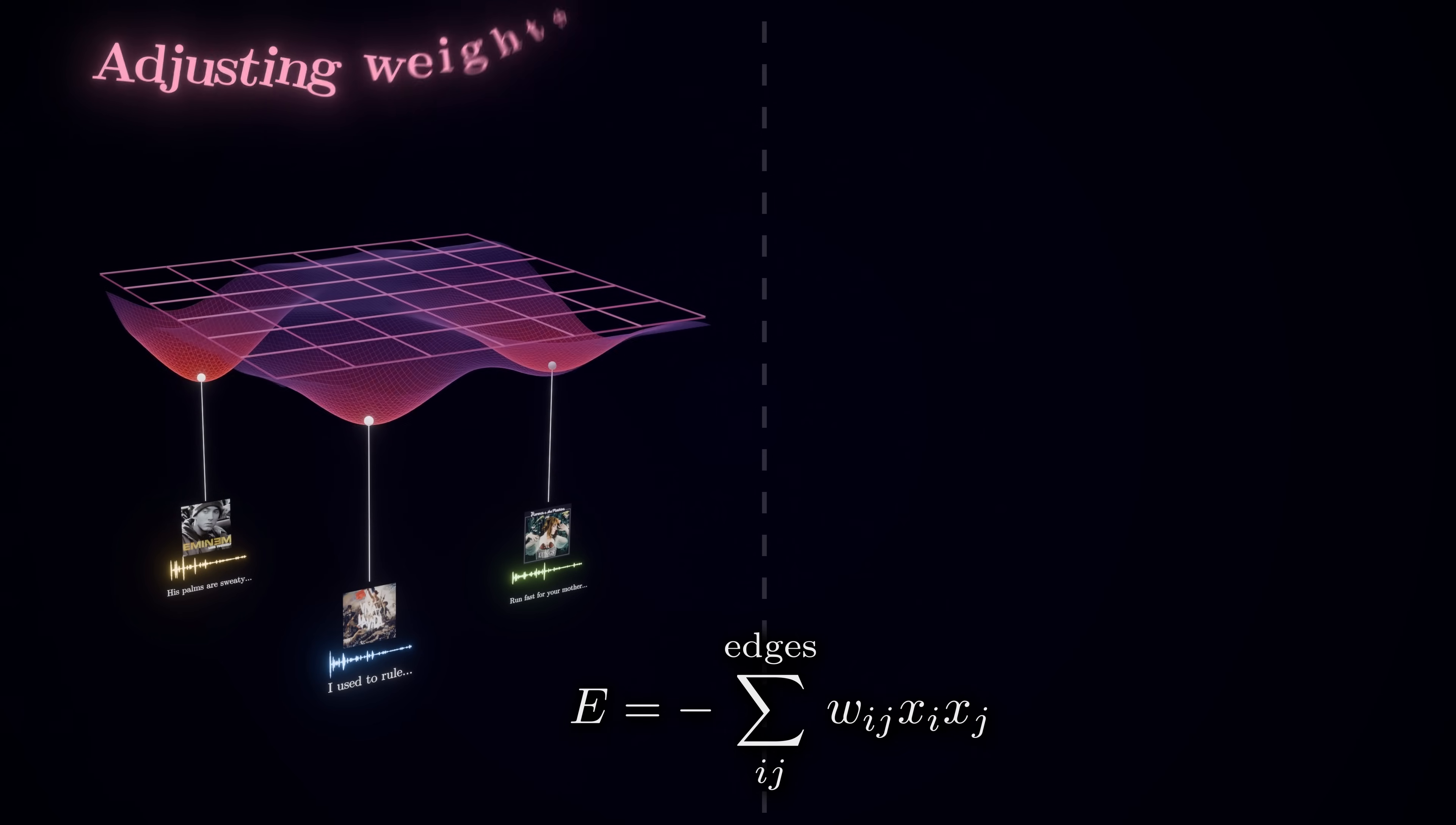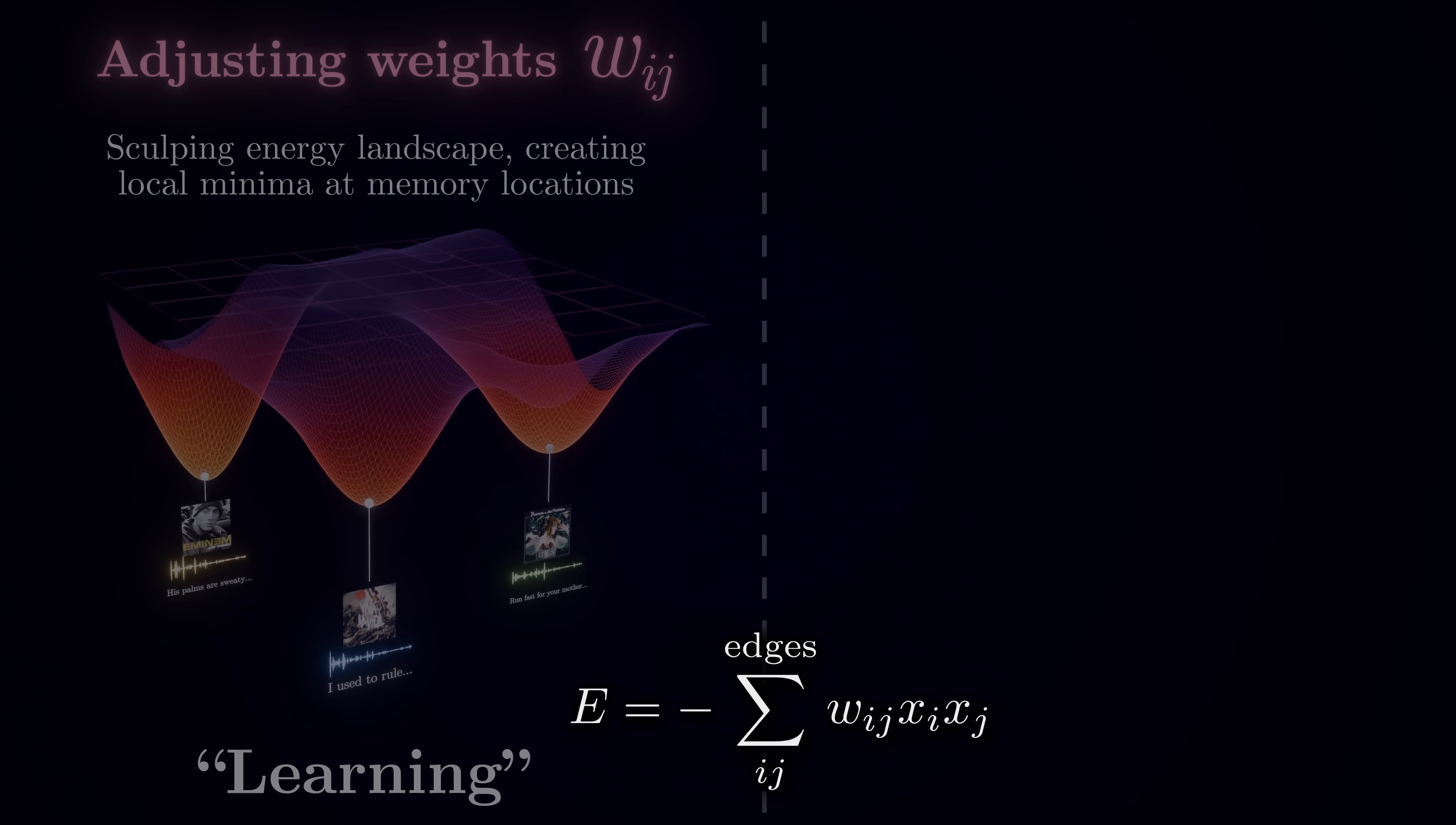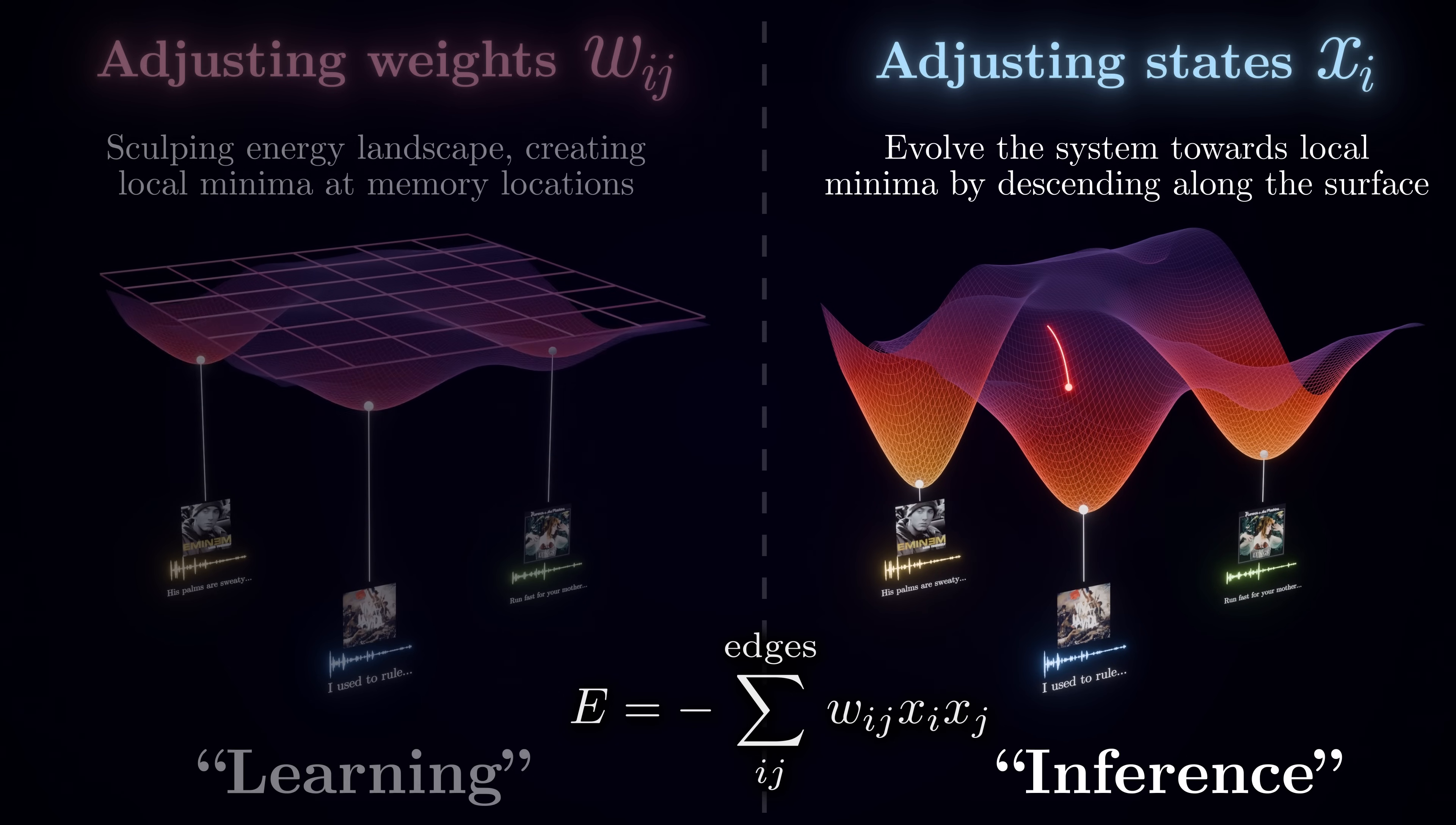As we will see further, there are essentially two modes of network updates that nicely map to the two aspects of associative memory. Namely, adjusting the weights corresponds to shaping the energy landscape, defining which configurations are stable by digging energy wells around them. This is the act of learning when we are writing new memories into the network. Once the weights are fixed, tweaking the states of neurons to bring them into greater agreement with the weights corresponds to descending along the energy surface. This is the act of inference when we are recalling the memory that is at the bottom of the energy well, which is nearest to the configuration of the input pattern.